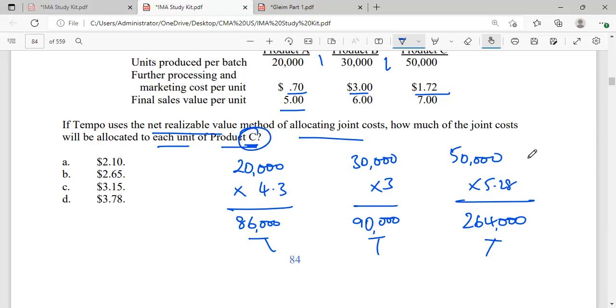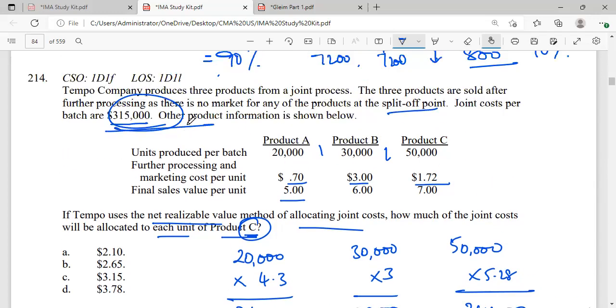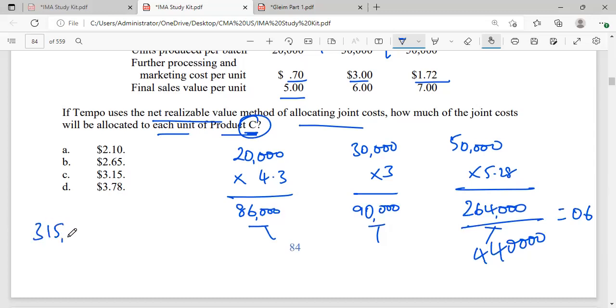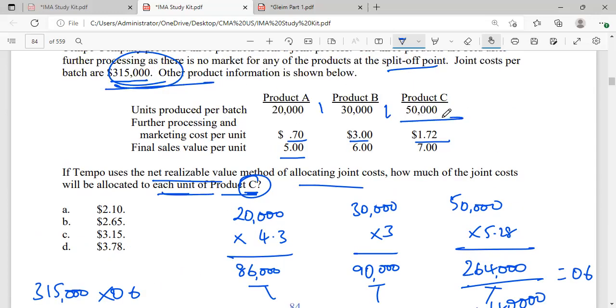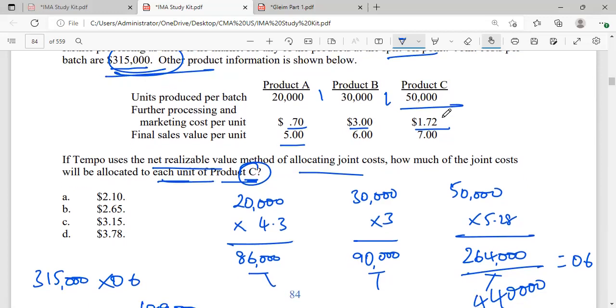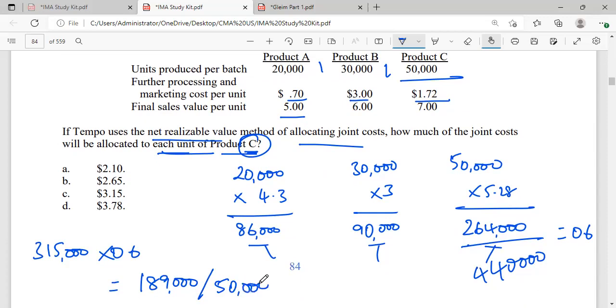Now I have to find it for Product C. For Product C, what I will do: 264,000 divided by 440,000 equals 0.6. Now what is the cost here? $315,000. So 315,000 into 0.6 equals 189,000. Now this 189,000 is the total cost, but he is asking each unit. How many units are there in C? 50,000 units. So 189,000 divided by 50,000—how much is it? 3.78.